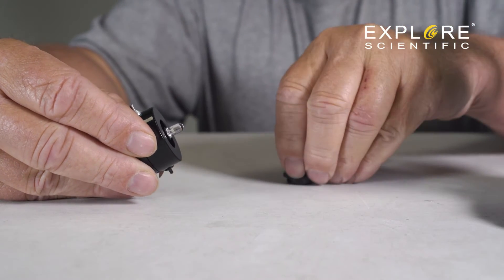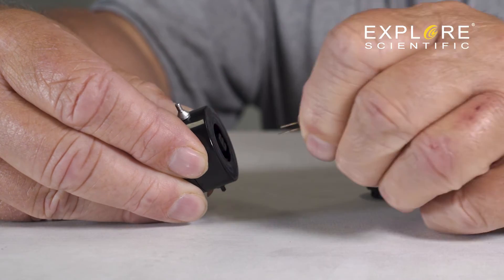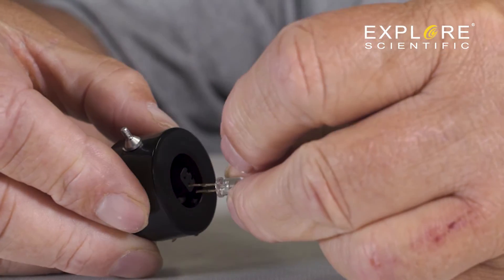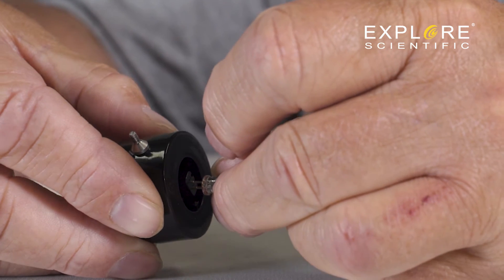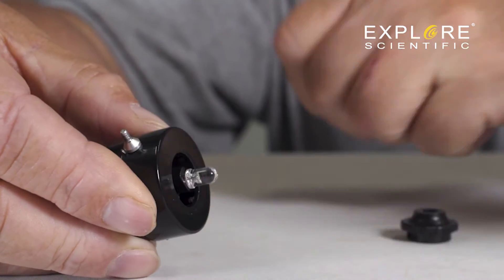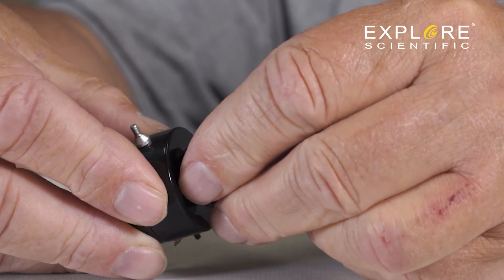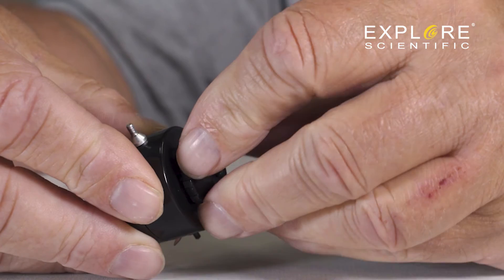To change the LED, remove the light assembly from the microscope. Remove the LED cover. Replace the LED. Then put the cover back in place. Once the LED cover is in place, put the assembly back in place.